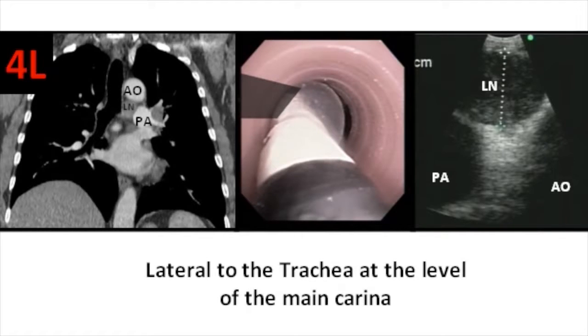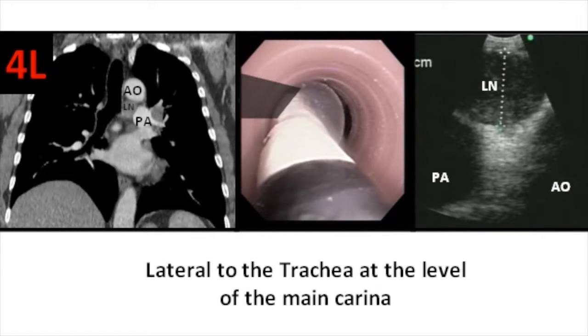The station's upper border is the superior margin of the aortic arch. The station's lower border is the upper rim of the left main pulmonary artery. The lymph node is usually located lateral to the trachea at the level of the main carina.